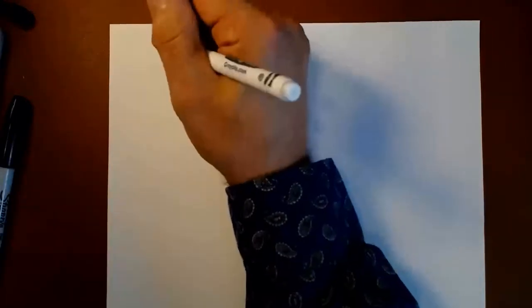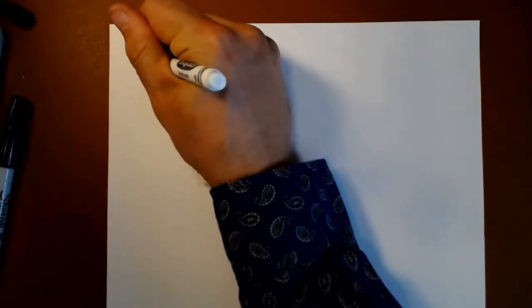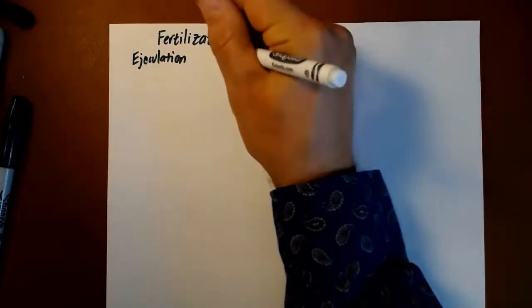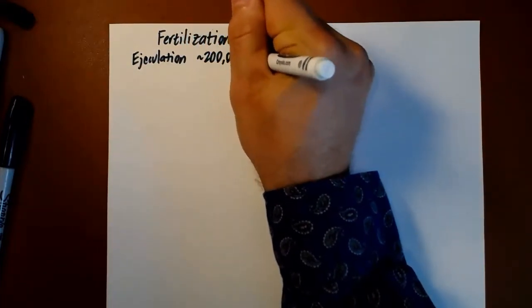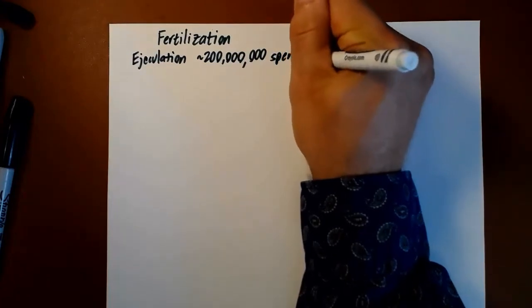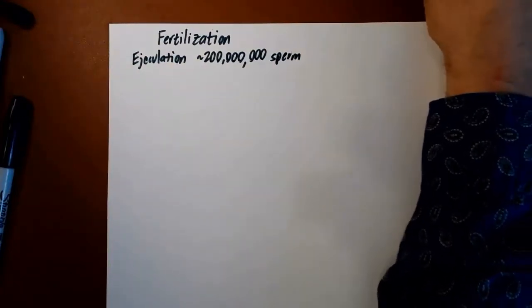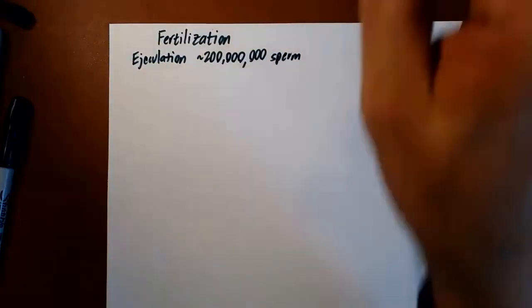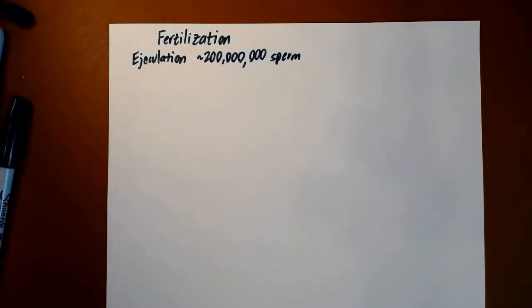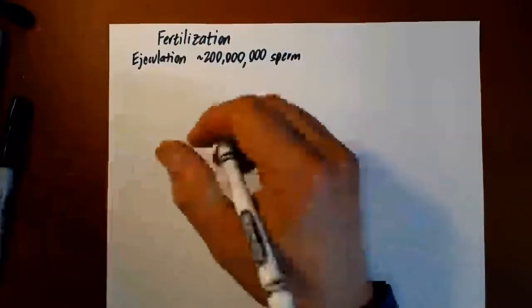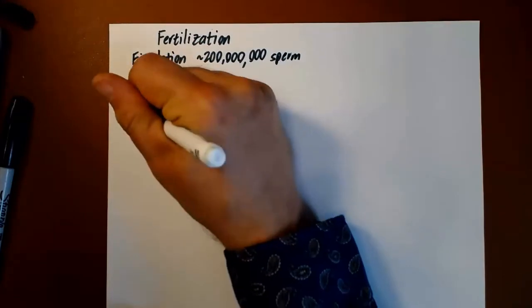In a typical ejaculation from a fertile male, there are about 200 million sperm. A good fraction of which are malformed or otherwise don't work properly, but there's a lot of viable sperm in a healthy ejaculation. If the woman is at the right point in her menstrual cycle, just pre or post ovulation, there will be one secondary oocyte generally. It's not impossible to have two or more, but usually one available to fertilize.